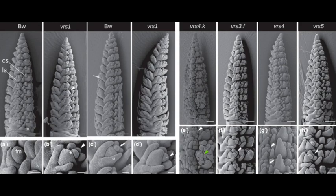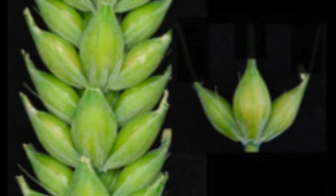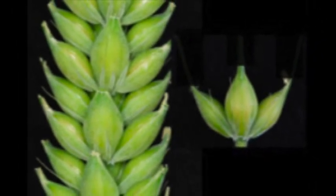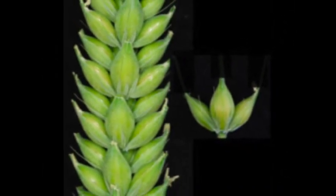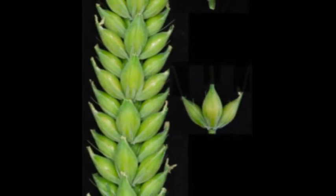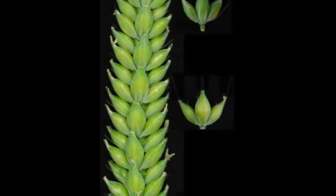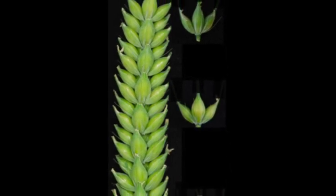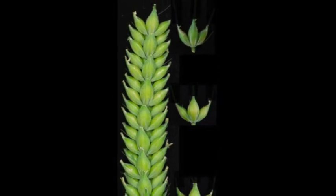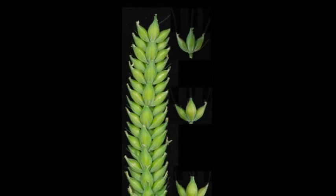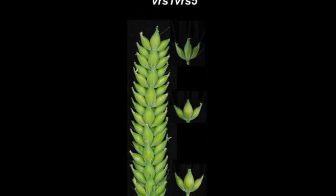The six-row varieties grown at the moment contain two of the alleles we were looking at. The genes that control the switch are called row-type genes or VRS genes — specifically VRS1 and VRS5 — and those alleles are always together in six-row cultivars. We now know that these encode transcription factors. It's a loss of function in those transcription factors that generates lateral spikelet fertility, so the active suppression seen in wild barley and two-row types is the action of many genes, with these two being critical.